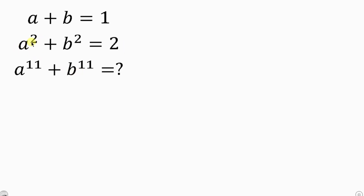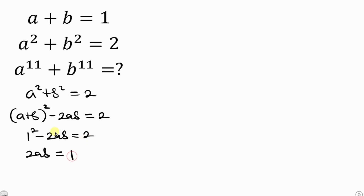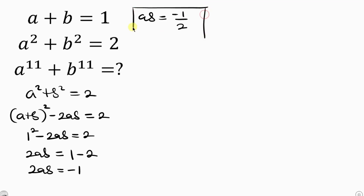Our first step will be to take the second equation, a squared plus b squared equal to 2, and express the left hand side as (a plus b) squared minus 2ab, equal to 2. Since a plus b equals 1, we get 1 squared minus 2ab equals 2, so 2ab equals 1 minus 2, that's negative 1, and therefore ab equals negative 1 over 2. This is a very important expression we're going to be using.